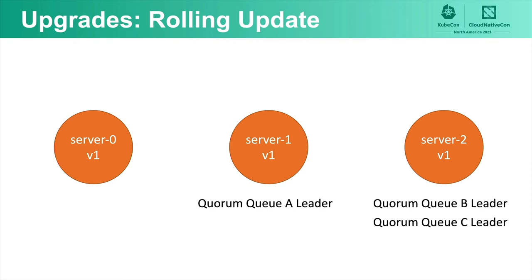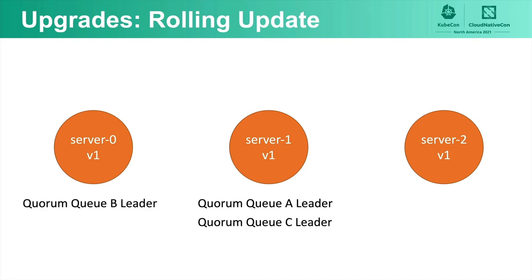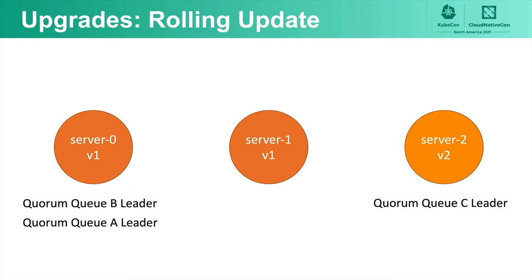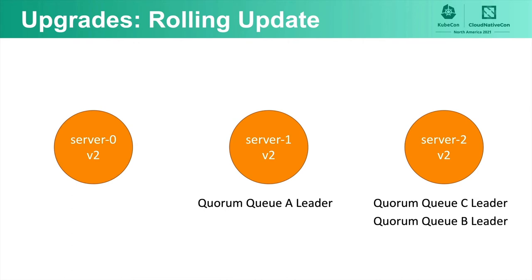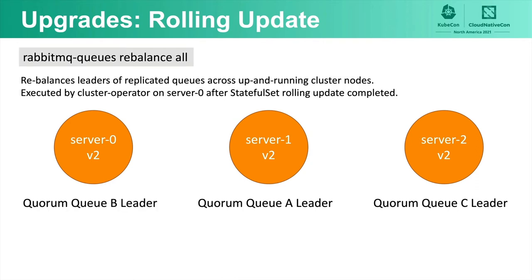In a rolling update example with a three-node cluster and three quorum queues (QA, QB, QC): QA's leader is on server 1, QB and QC leaders are on server 2. The StatefulSet rolling update starts with server 2 — the drain script migrates all leaders away from server 2 to other nodes, then server 2 is updated. The same happens for server 1 then server 0. Once the StatefulSet update completes, the cluster operator execs into server 0 and runs the rabbitmq queues rebalance all command to rebalance leaders across all nodes.